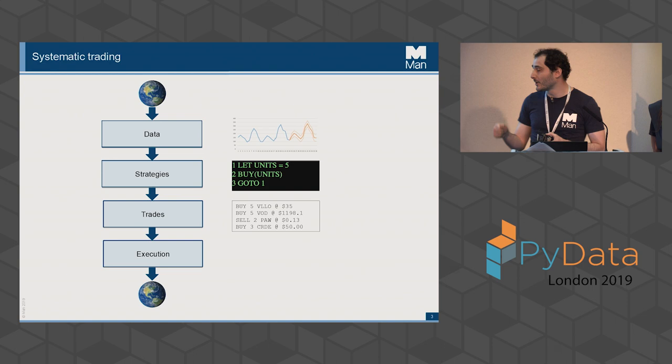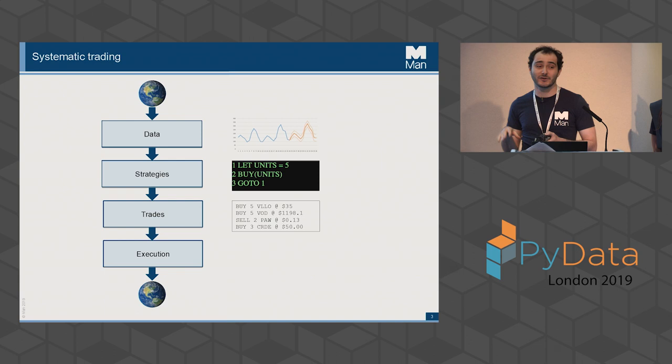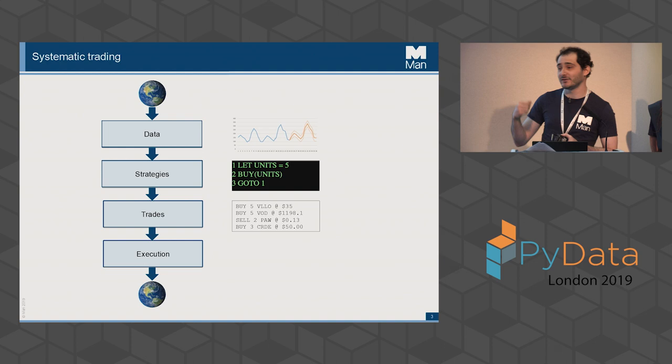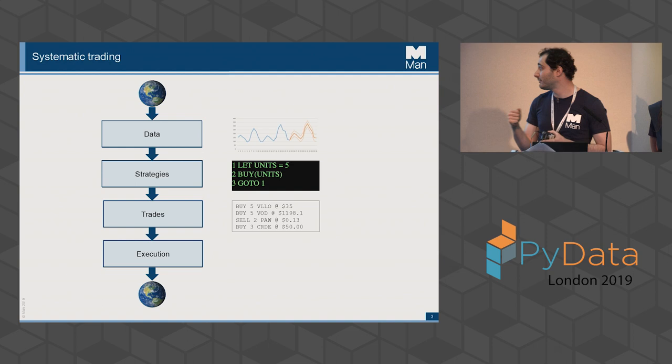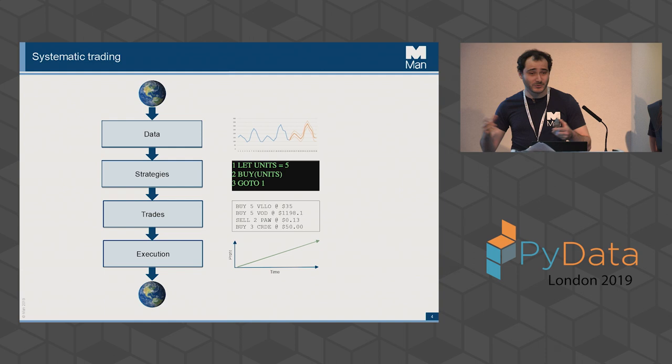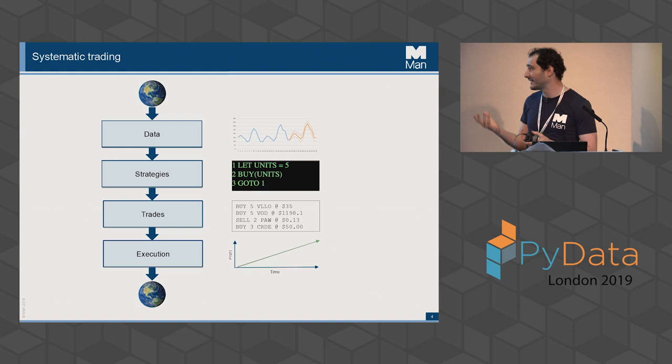Trades flow through to execution, where we find a counterparty — it might go through a broker or an exchange. Execution is quite a complex pipeline involving minimizing trading costs and ensuring that the price we trade at matches the price we expected when the strategy was running. The end goal, as you can probably imagine, is to make a profit. Buy low, sell high — it's the old adage.